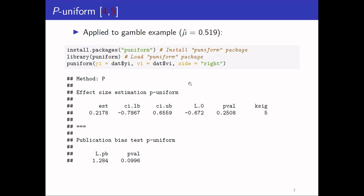Let's apply the method to the gambling example, where the average effect size estimate from the random effects model was about 0.52. First we install the package, then load it, and then we can use the p-uniform function to apply the method.